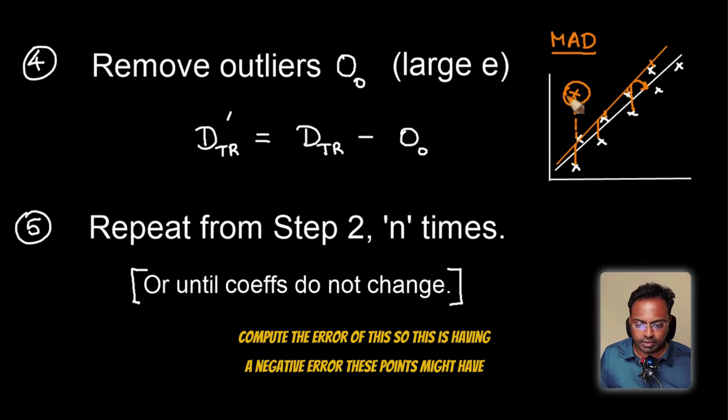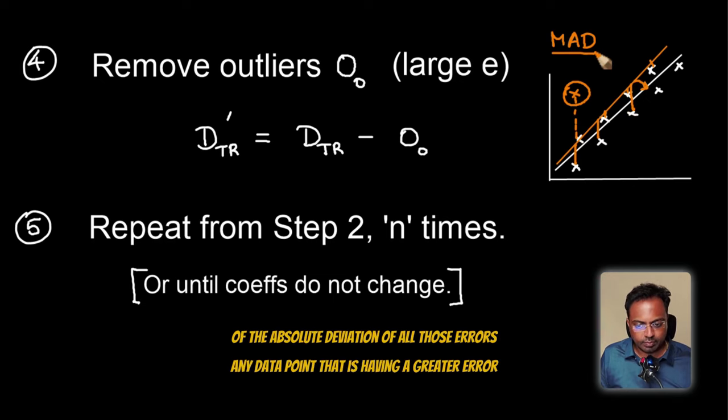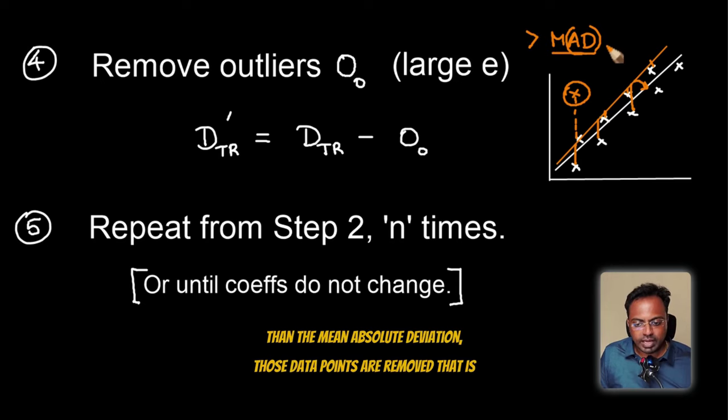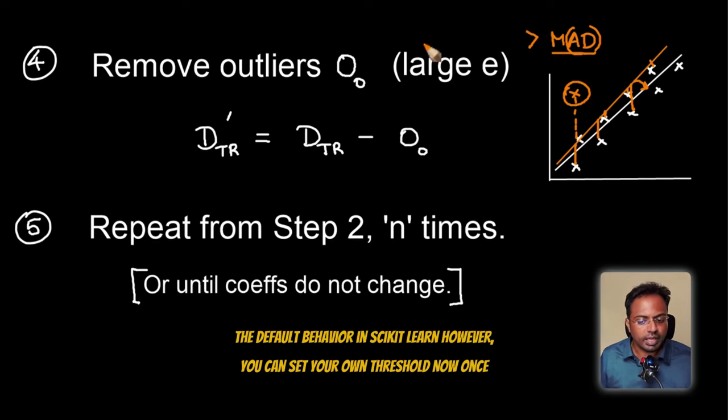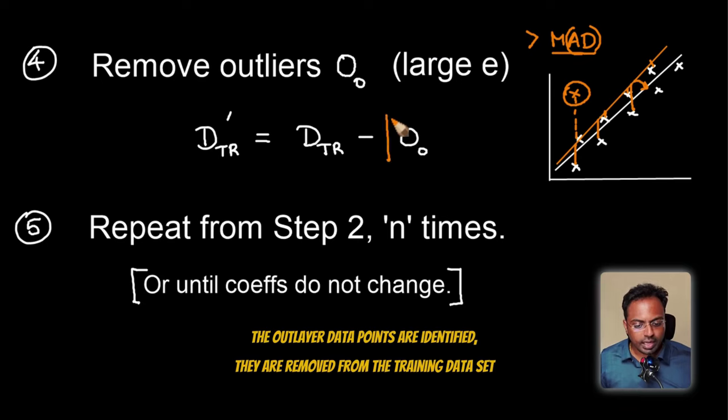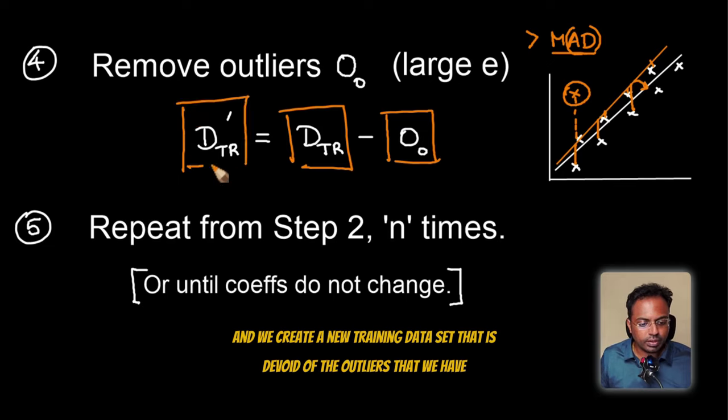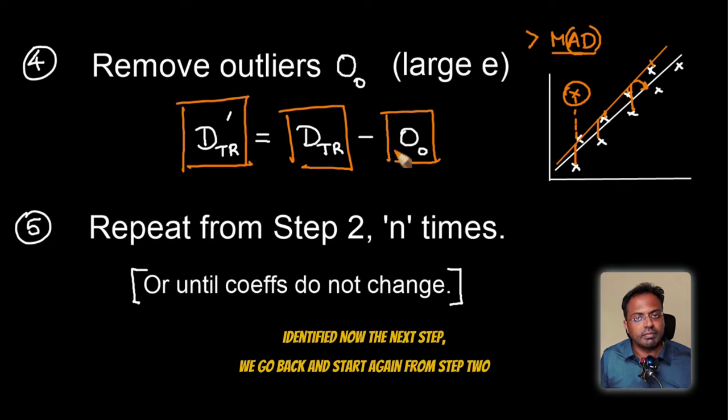Compute the error of this. So this is having a negative error, these points might have a positive error over the top. Compute the mean of all those errors, mean of the absolute deviation of all those errors. Any data point that is having a greater error than the mean absolute deviation, those data points are removed. That is the default behavior in scikit-learn. However, you can set your own threshold. Now once the outlier data points are identified, they are removed from the training data set and we create a new training data set that is devoid of the outliers that we have identified.